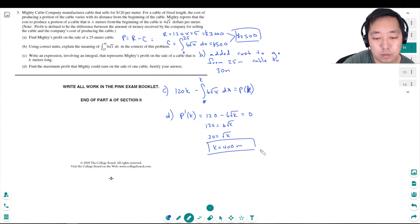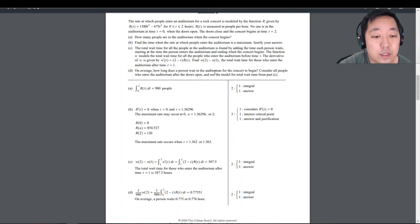And this would be the maximum because at this point, because this is an increasing function, so eventually this is going to be more expensive than $120 per meter. Okay, alright, that's pretty quick, let's look at this one.